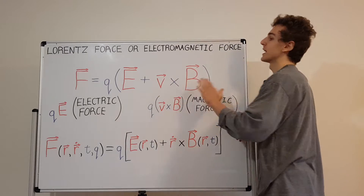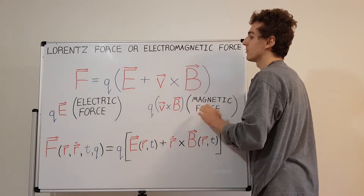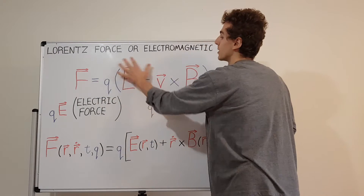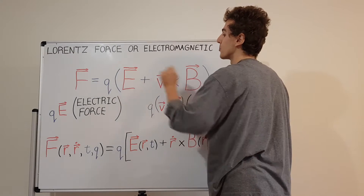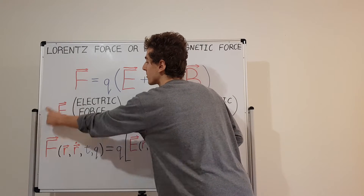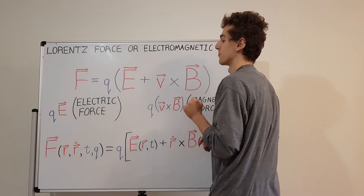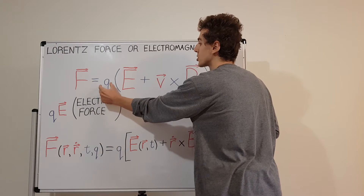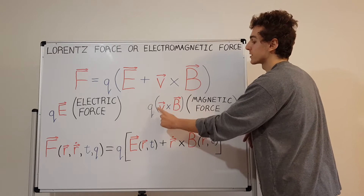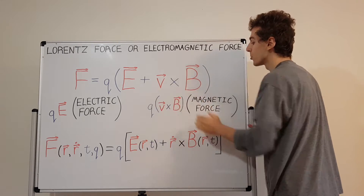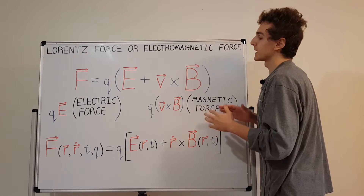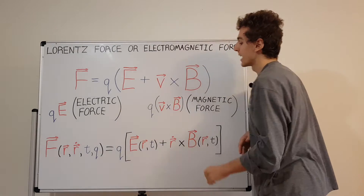There are actually two terms in the expression for the Lorentz force. If you distribute the charge Q out to both terms, you get two separate chunks. The first term is Q times the electric field, and that is called the electric force term. Then if you distribute Q onto the second section, you get Q times the cross product of V and B, and this is called the magnetic force. So you've got two contributing factors: the electric force and the magnetic force.